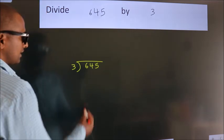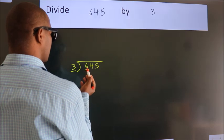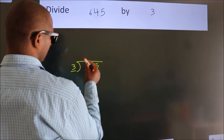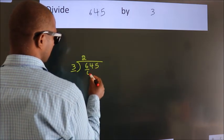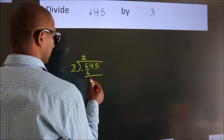Next, here we have 6, here 3. When do we get 6? In 3 table, 3 2s, 6. Now, we should subtract, we get 0.